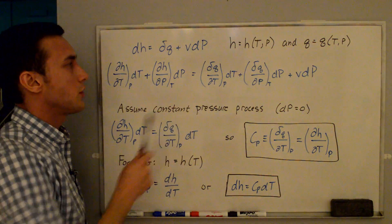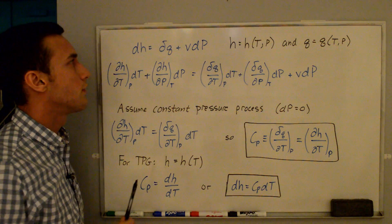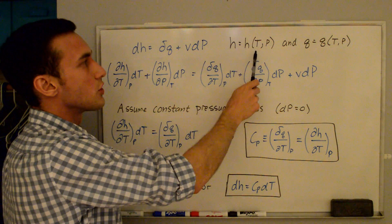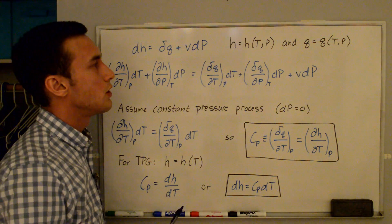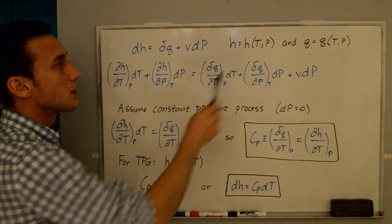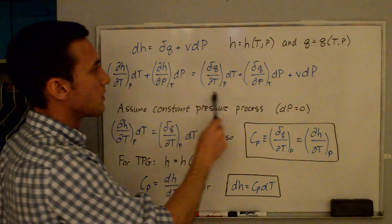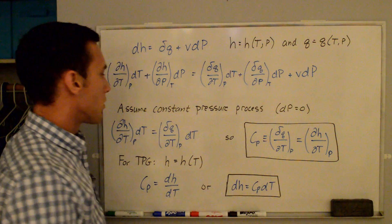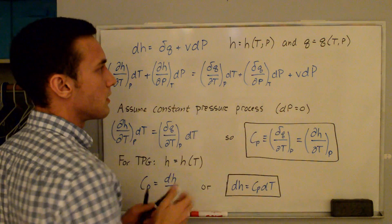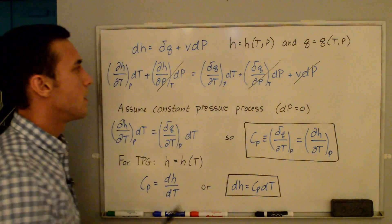Now we'll go through the process for the constant pressure specific heat, cp. Here we have the first law again but in terms of enthalpy. Enthalpy is expressed as a function of temperature and pressure rather than temperature and specific volume. Expanding out the differentials using partial derivatives, we expand dH and dq, and we have the plus v dp term. Assuming a constant pressure process, dp equals zero, so any term with dp goes to zero, leaving just two terms.